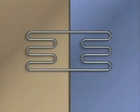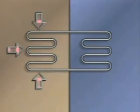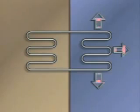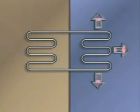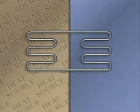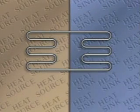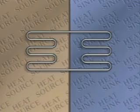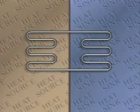In a refrigeration system, heat is transferred from the substance that's being cooled into the refrigerant. It is then transferred from the refrigerant to another substance that can receive the heat. The substance that heat is transferred from is the heat source, and the substance that heat is transferred to is the heat sink. Every refrigeration system has a heat source and a heat sink.